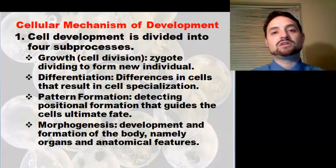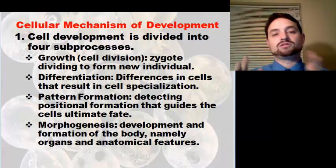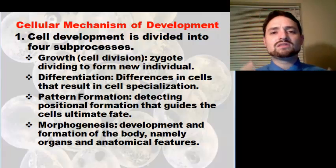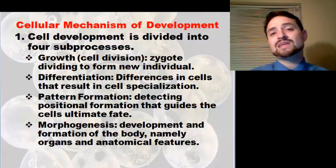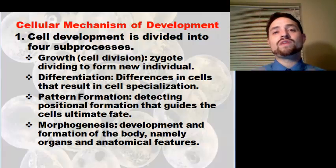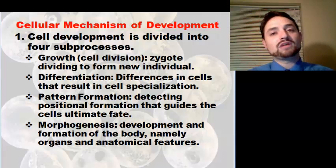Differentiation involves differences in cells that result in cell specialization. When you look at your body, you've got muscle cells, nerve cells, bone cells, connective tissue — all kinds of different cells. Although they all have the same DNA, their function is different, whether they can reproduce or not is different. There are tons of differences that take place.